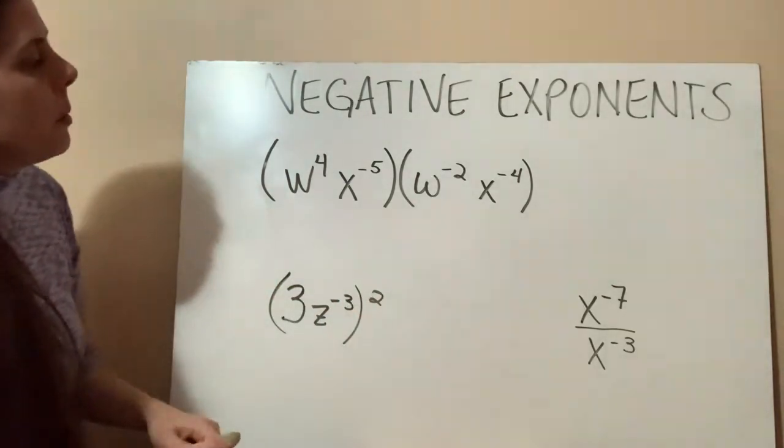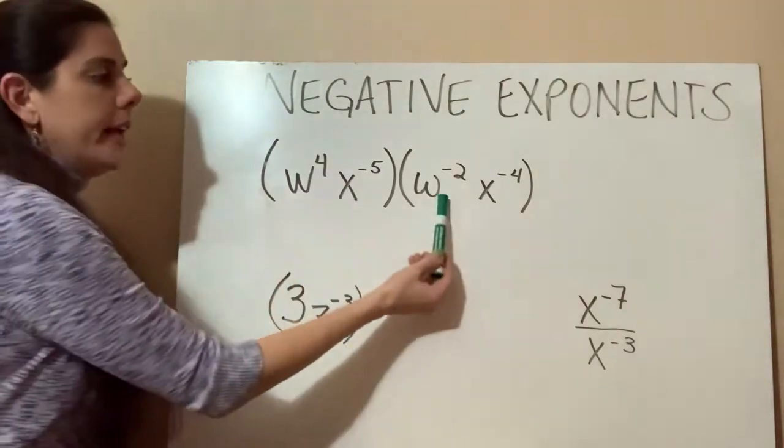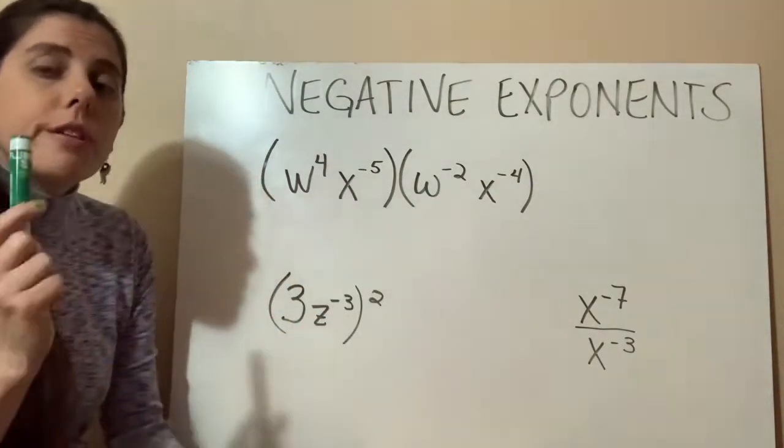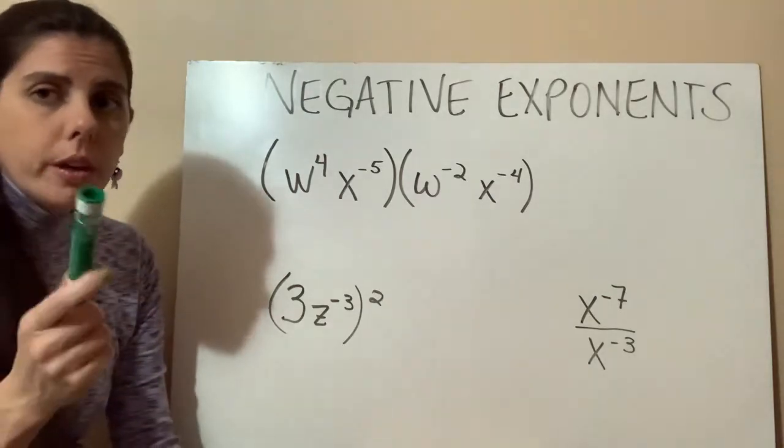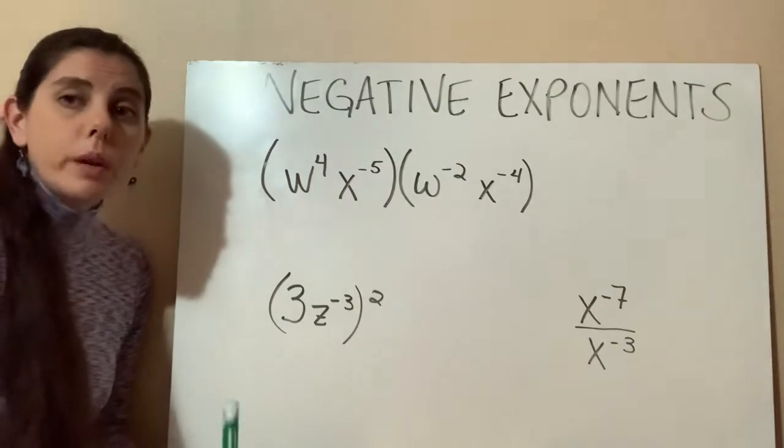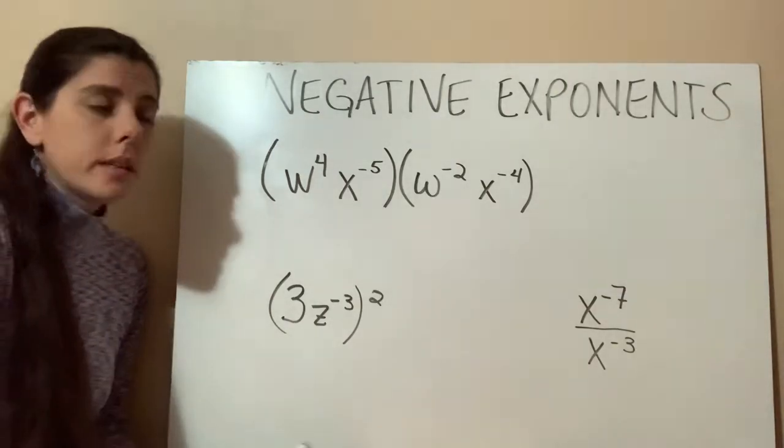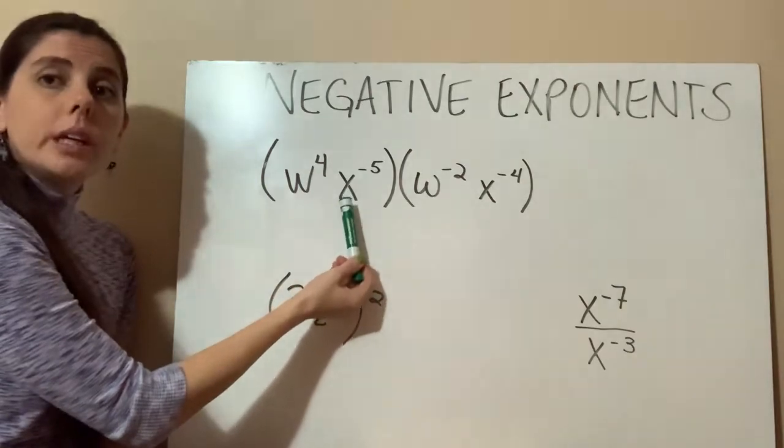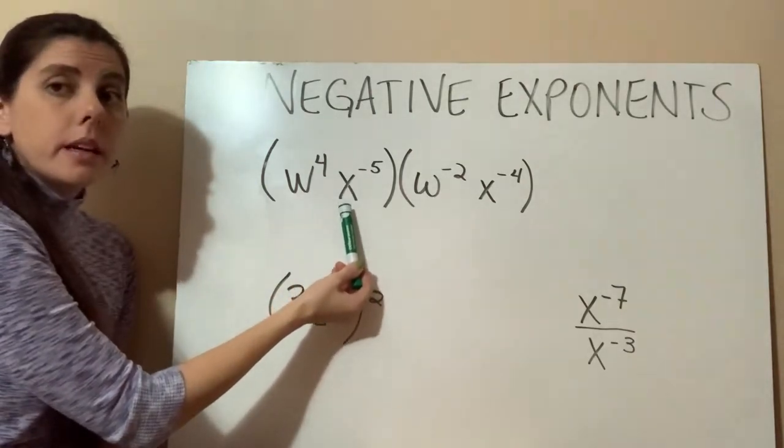So in our first problem, we have three different variables that have negative exponents. The thing that you have to keep in mind when you're looking at these negative exponents is what is that negative exponent really on? What's the base? So when we look at this, this negative 5 is only on the x. The x is the base. That's it.